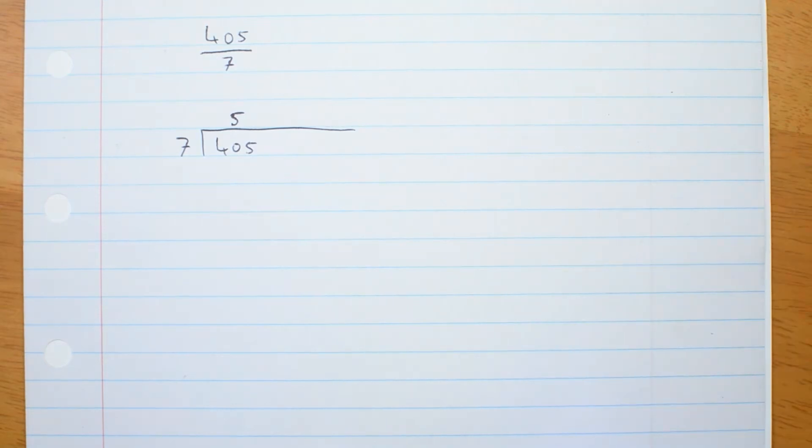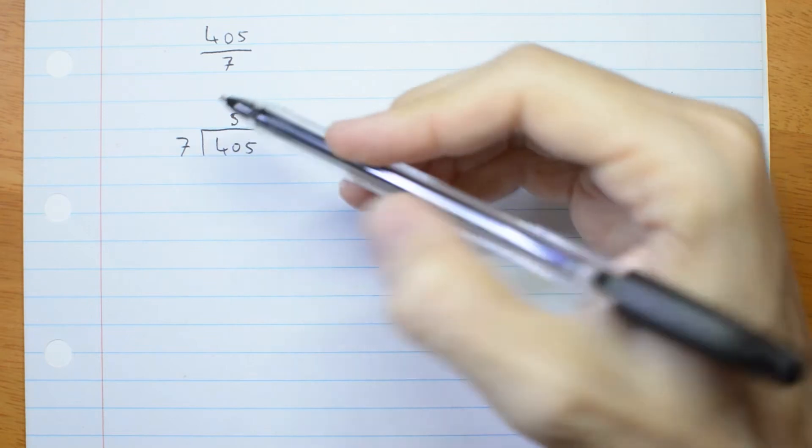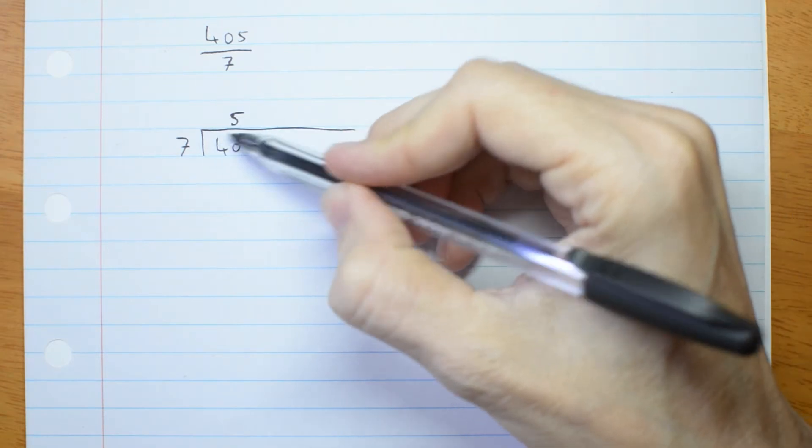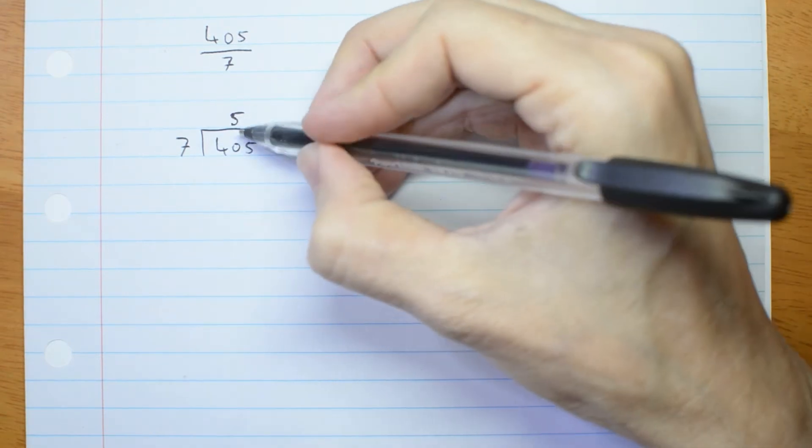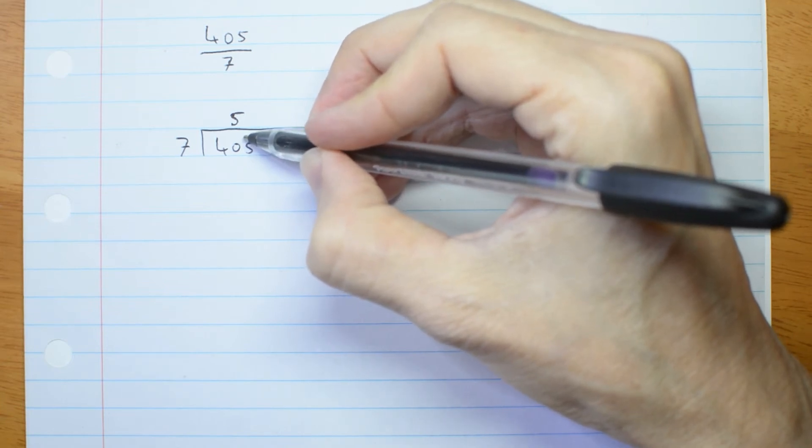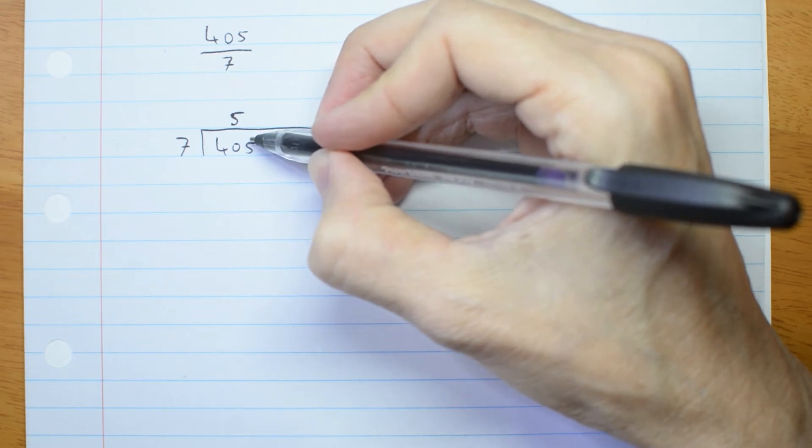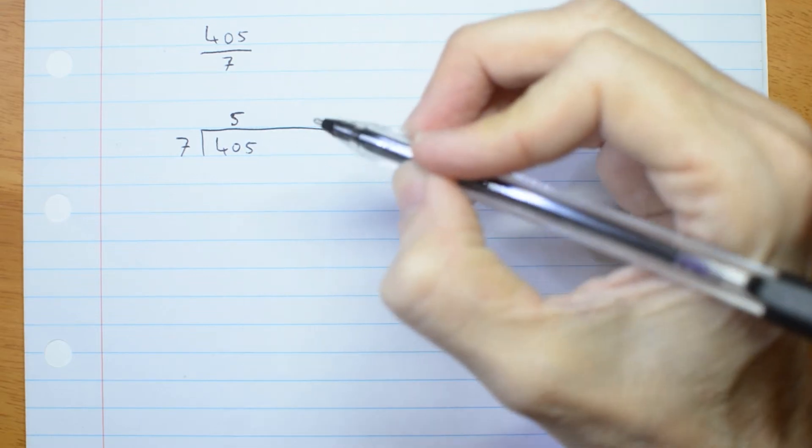Now, if we were doing short division, we would go 7 fives are 35. So 40 is what I had. So the remainder would be 5 and I would write a little 5 here. If I start trying to do that with x's, x squareds, x cubes, etc., it's going to get really messy. So we're going to do long division.